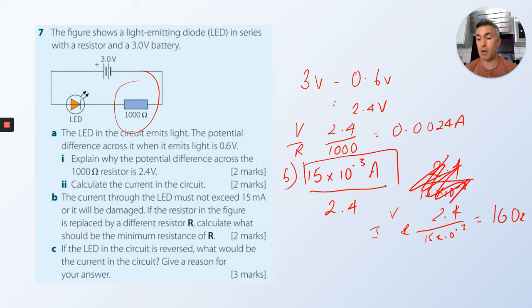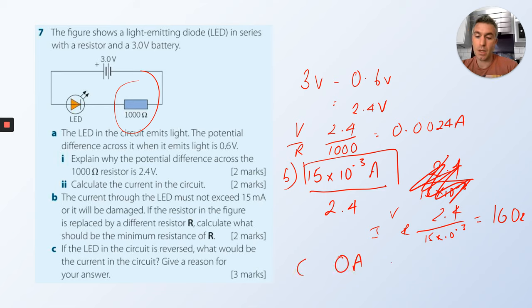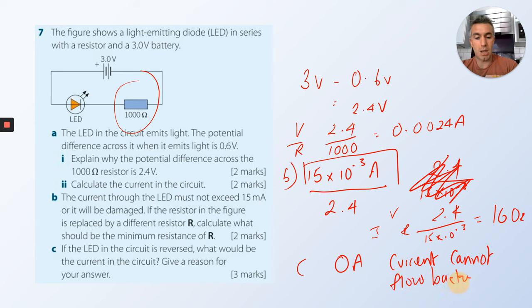If the LED in the circuit is reversed, what would be the current in the circuit? LEDs and diodes only allow current to flow one way. If you turn them around, the current can't flow at all. The answer is zero amps — current cannot flow backwards through the diode.